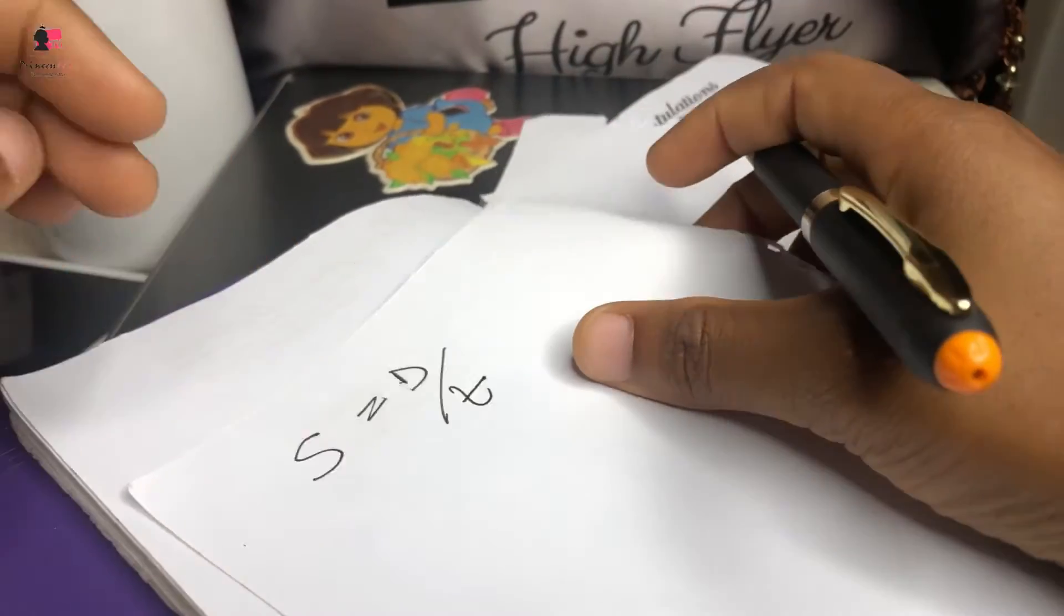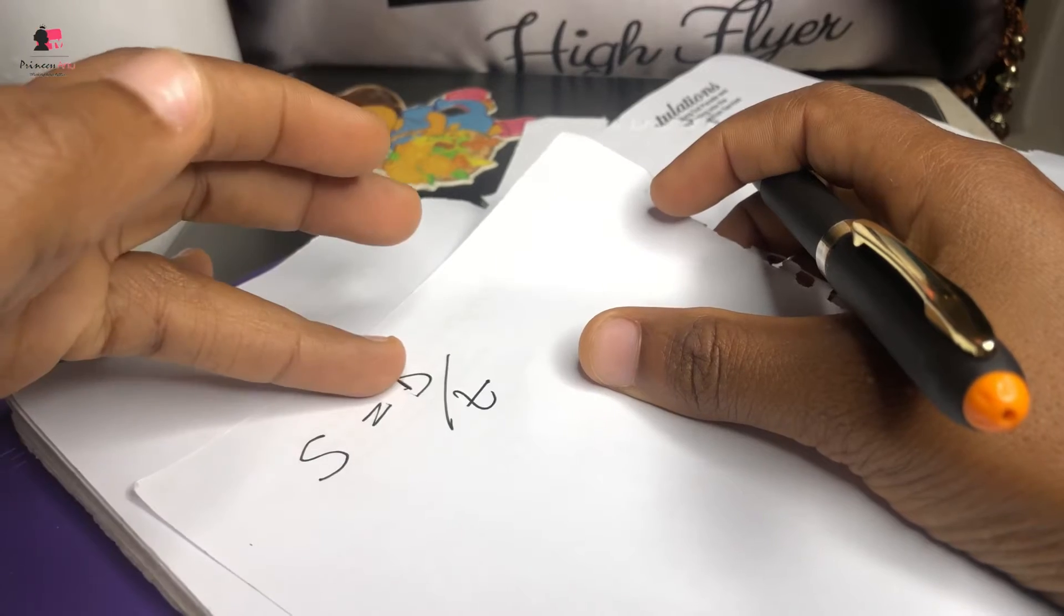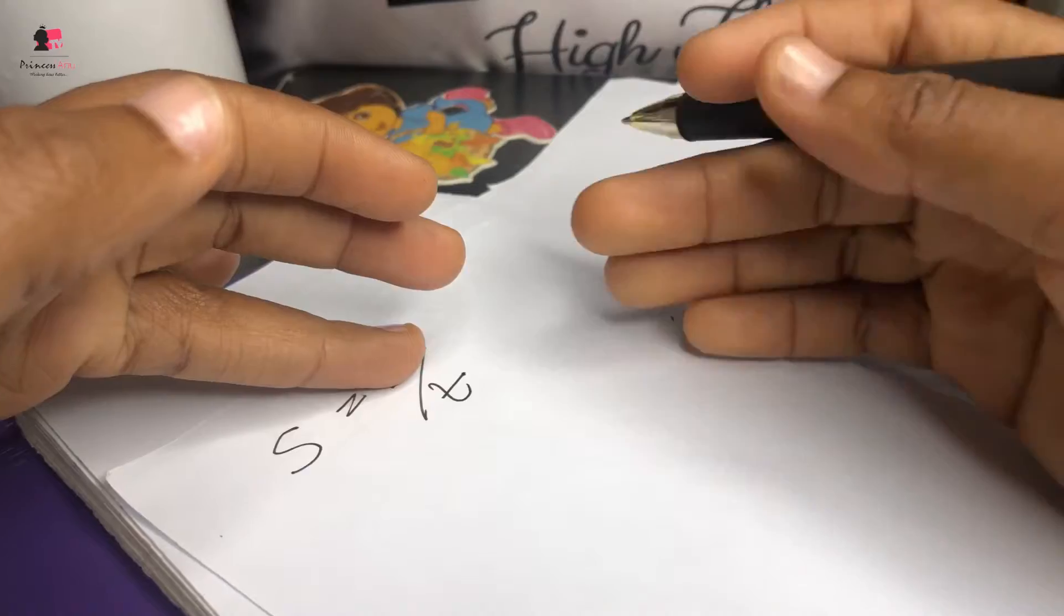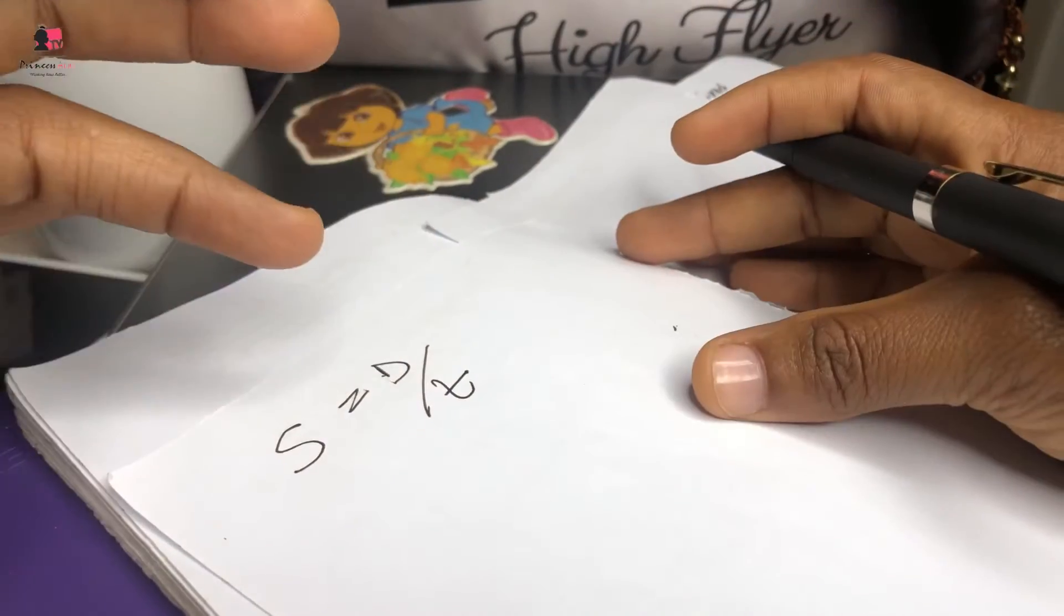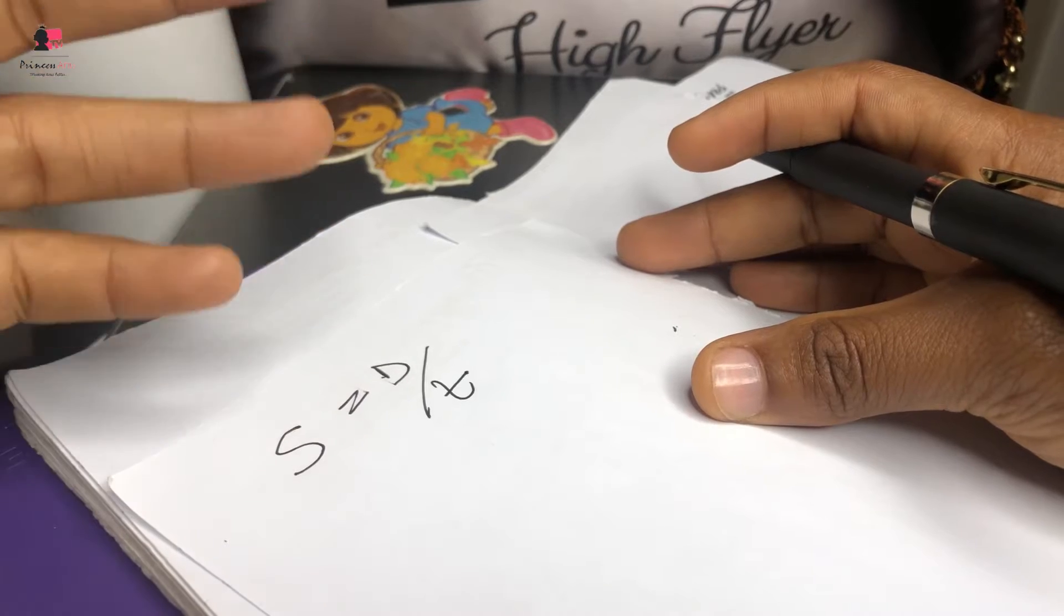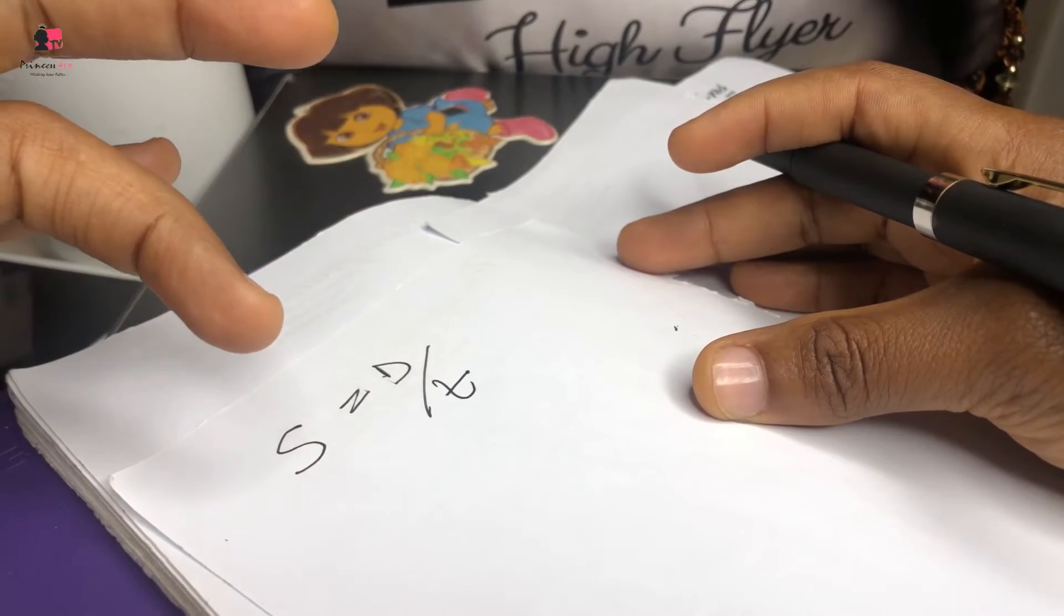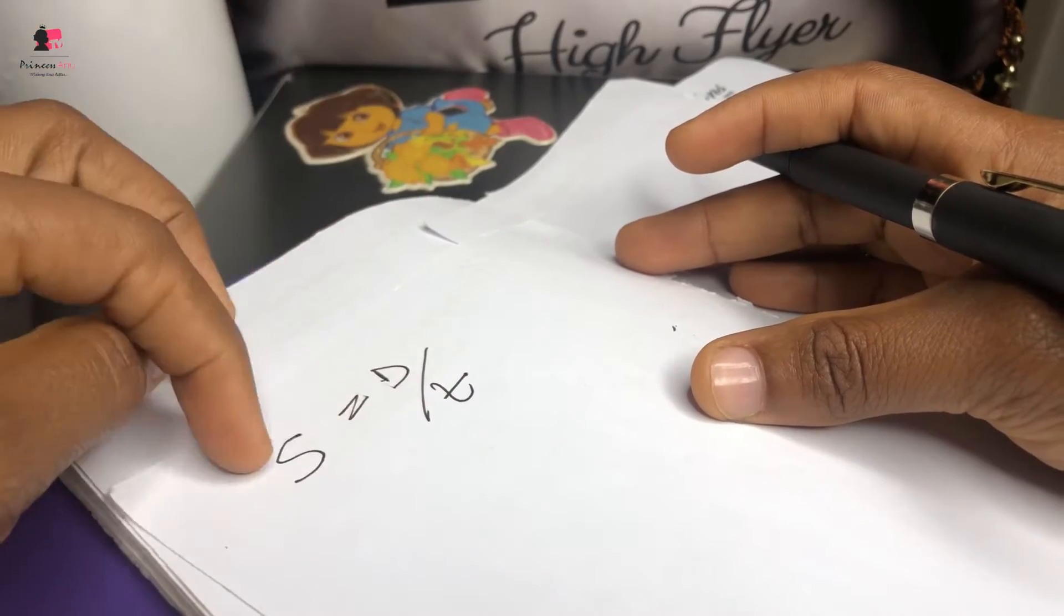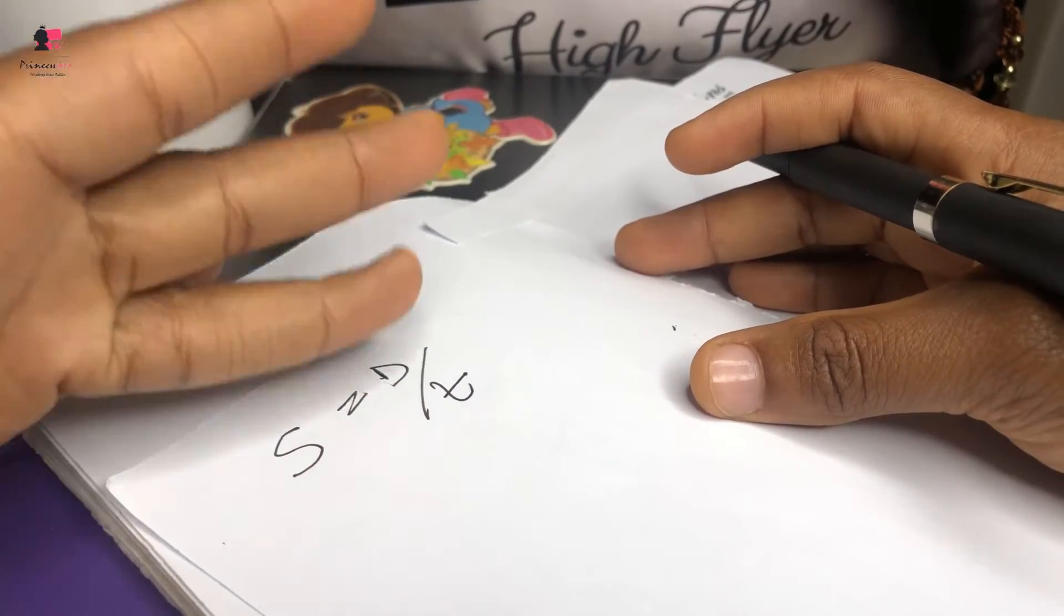So if you want to calculate the speed of an aircraft, you get the distance, you get the time that the aircraft is going to take to fly that distance, and you'll be able to get the speed that the aircraft will be flying. Also, if you want to get the distance, you have to have the speed and the time before you can get the distance. Obviously, one has to be missing - that's normal mathematics.